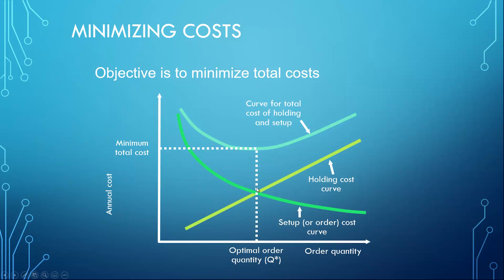The ordering cost curve is decreasing and the holding cost curve is increasing, so they will meet at a common point — and that will be the lowest point. The optimal order quantity will be the intersection point between the two curves, as shown in the graph.